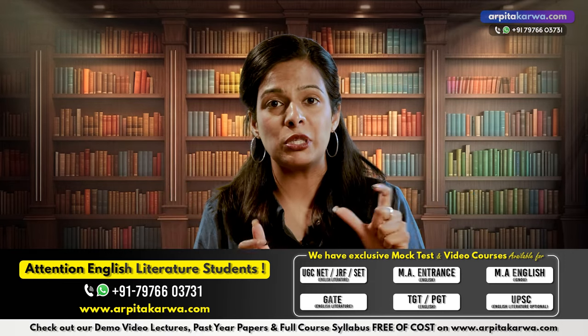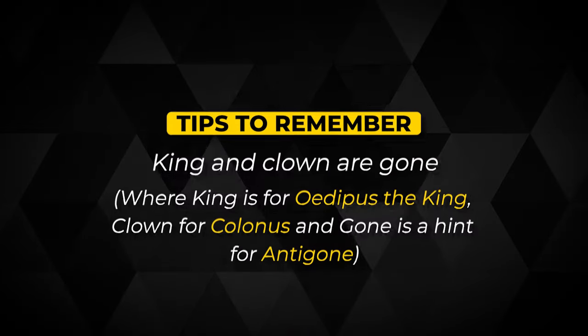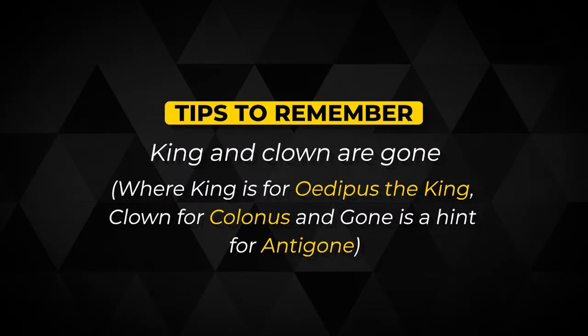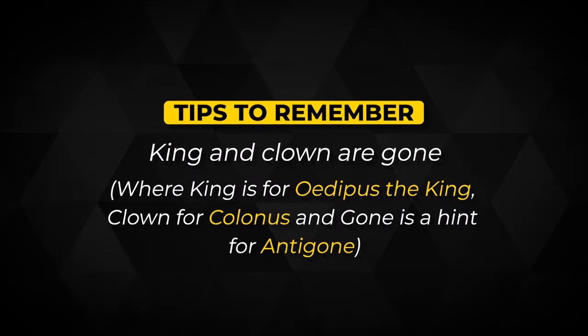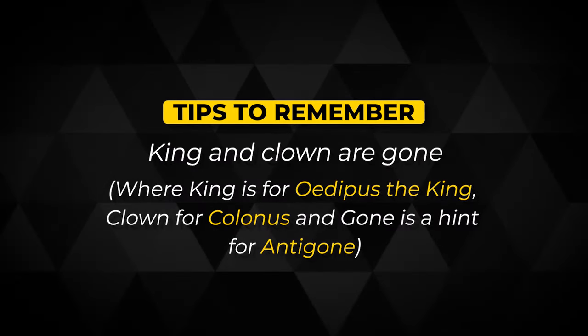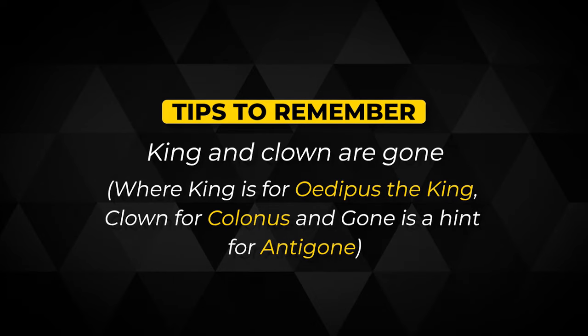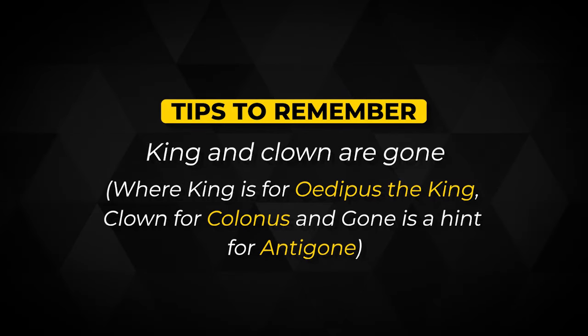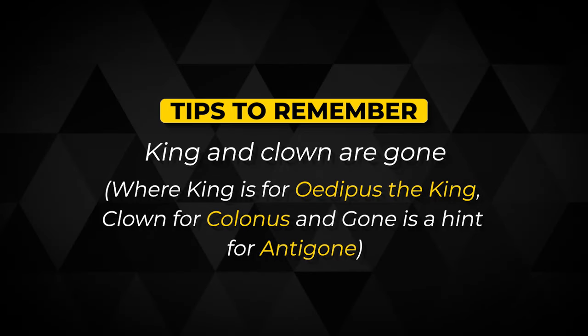The best way to remember these three titles is to remember the line: 'King and Clown are Gone.' King is for Oedipus the King, Clown is for Colonus, and Gone is for Antigone. If you remember this line, you will remember all three works.